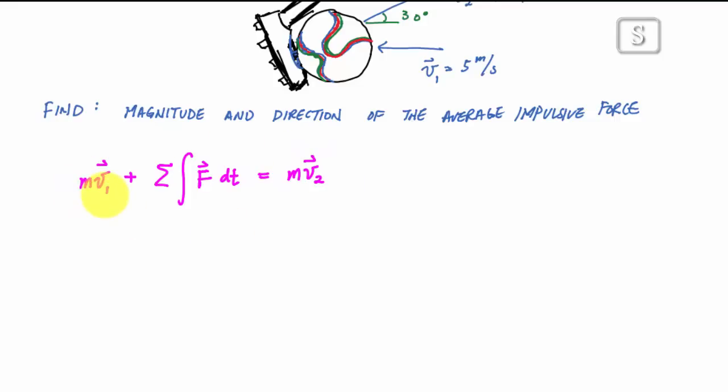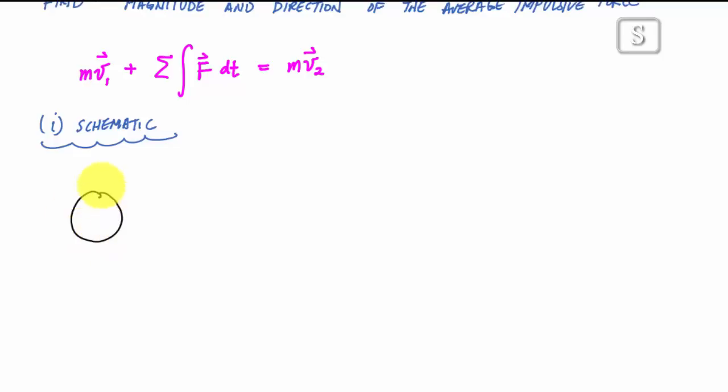So the first thing I'll do for this problem when I apply this is I like to draw the schematic of the particle that I'm looking at. In this case it would be this soccer ball. What I want to do is draw a schematic that matches my equation. Initially I have my soccer ball here, it has a velocity towards the left.